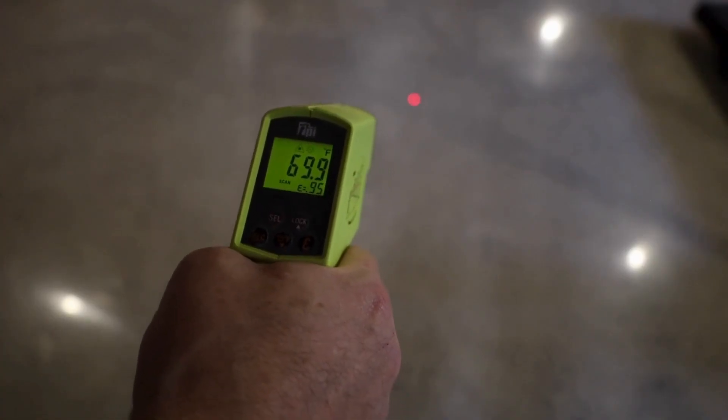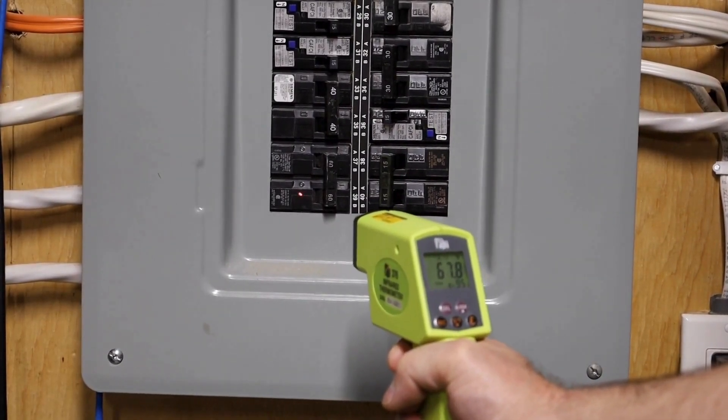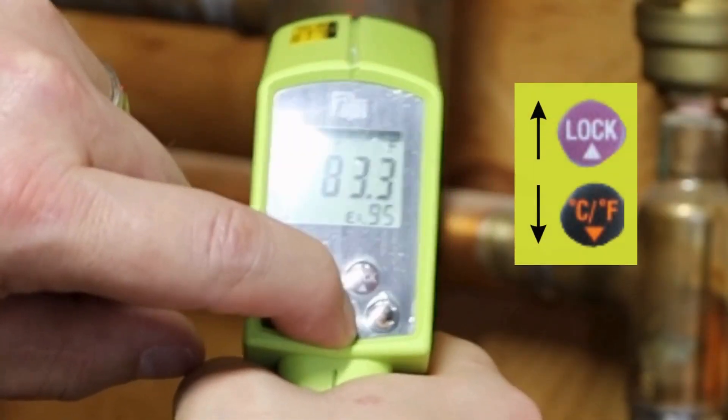The TPI 376 infrared thermometer also has adjustable emissivity for more accurate readings. Press emissivity and adjust it accordingly.